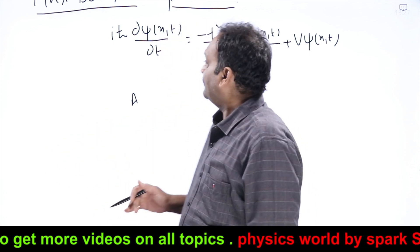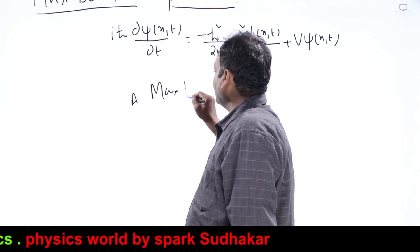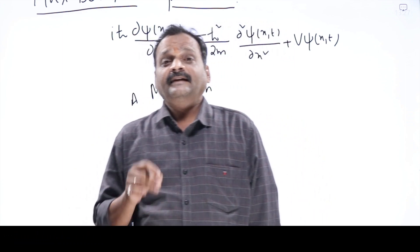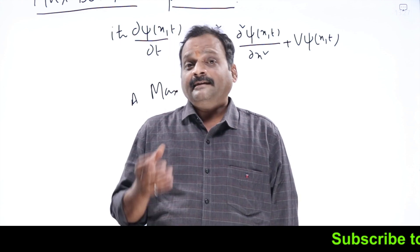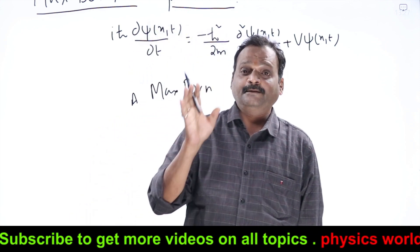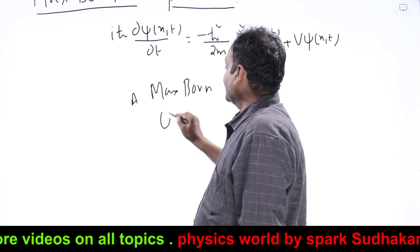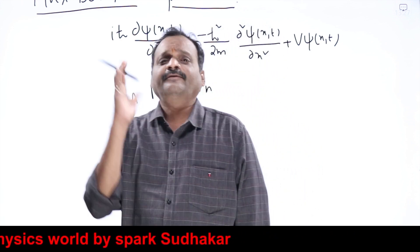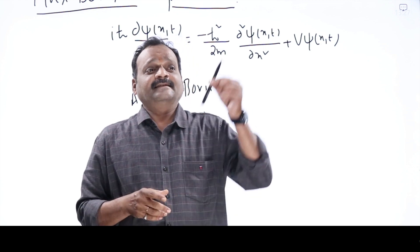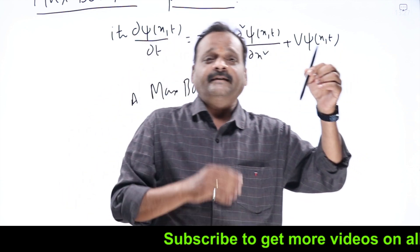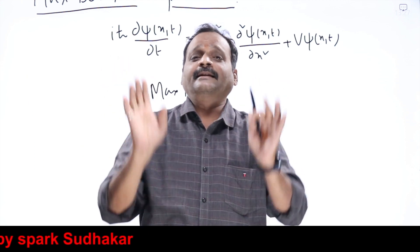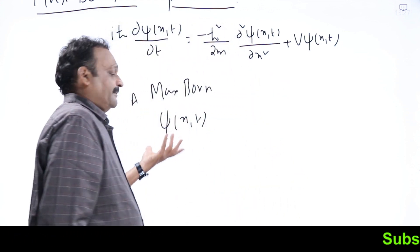Then the German physicist Max Born came and gave one excellent interpretation for ψ, and that interpretation we are still following today after 100 years — it was accepted by everybody. He said that ψ(x,t) is meaningless. The wave function ψ(x,t) is simply a mathematical function; it has no physical significance. This was found to be satisfactory for all — if you say something is meaningless, there is nothing to deny, so they were forced to accept this concept.